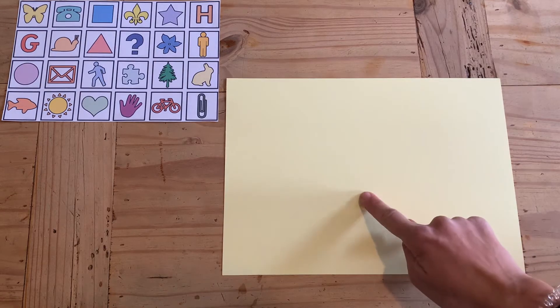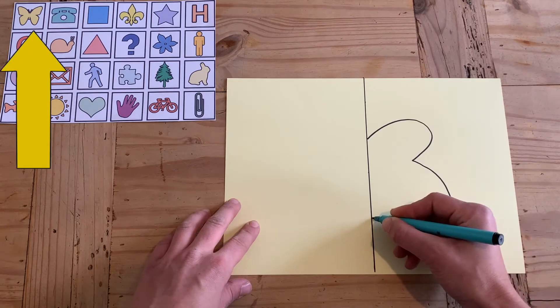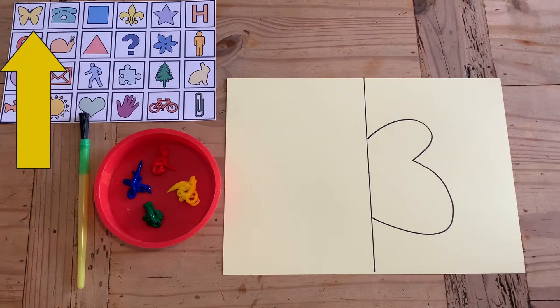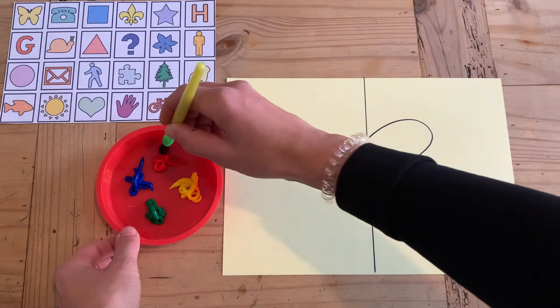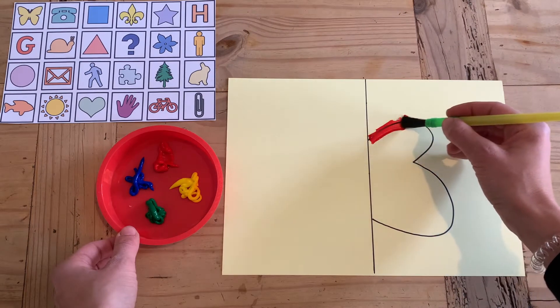You could reinforce children's understanding of what symmetric means by getting them to draw their own symmetric shapes. They could pick a shape off the sorting card, draw half of it, and use paint to go over the line they've drawn.